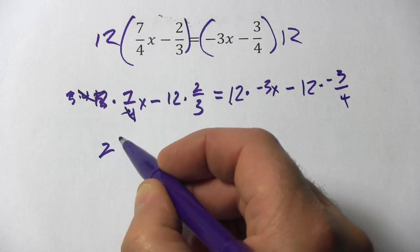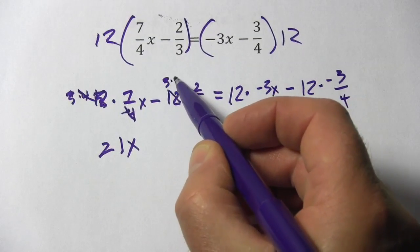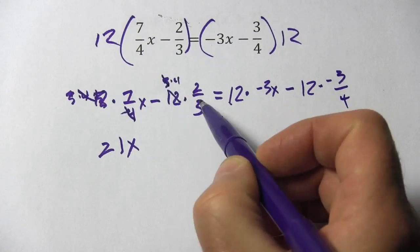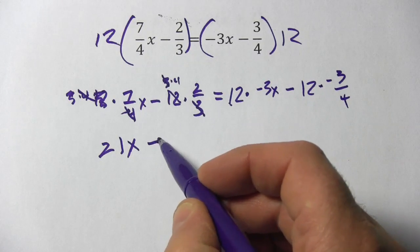I'm going to do the same thing here. This is 3 times 4. The 3s will cancel here and I get 4 times 2 and that's 8. So this is minus 8.